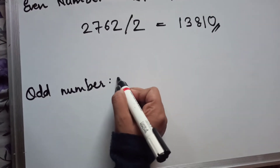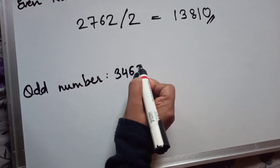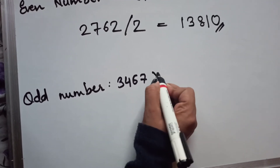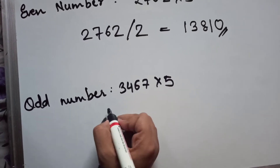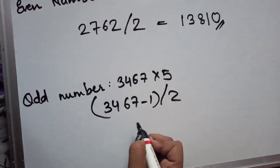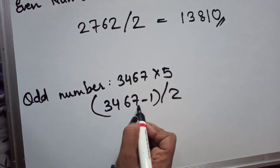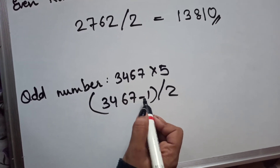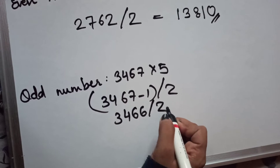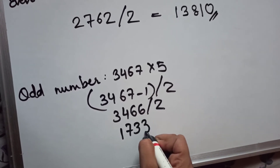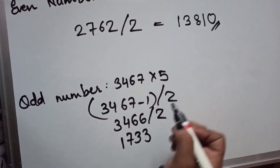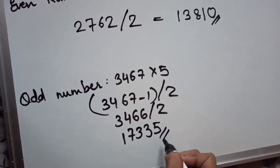For an odd number, for example 3467, first subtract 1 to make it even: 3467 − 1 = 3466. Now divide by 2 to get 1733. Since the original number was odd, add 5 instead of 0, giving 17335. That is 3467 × 5.